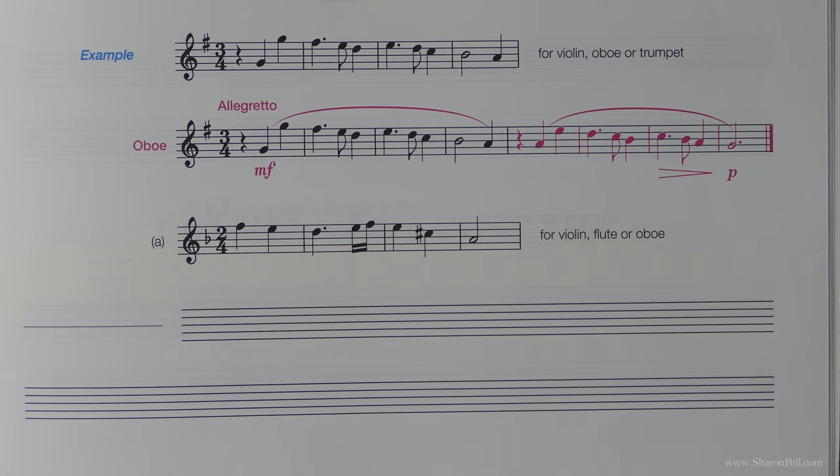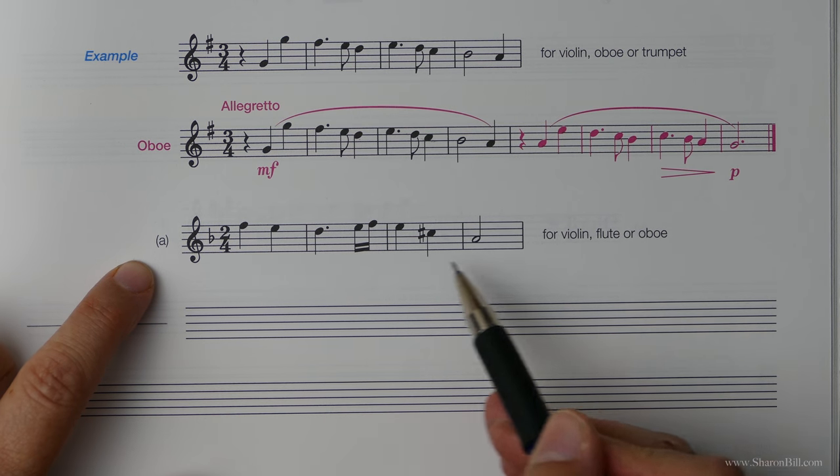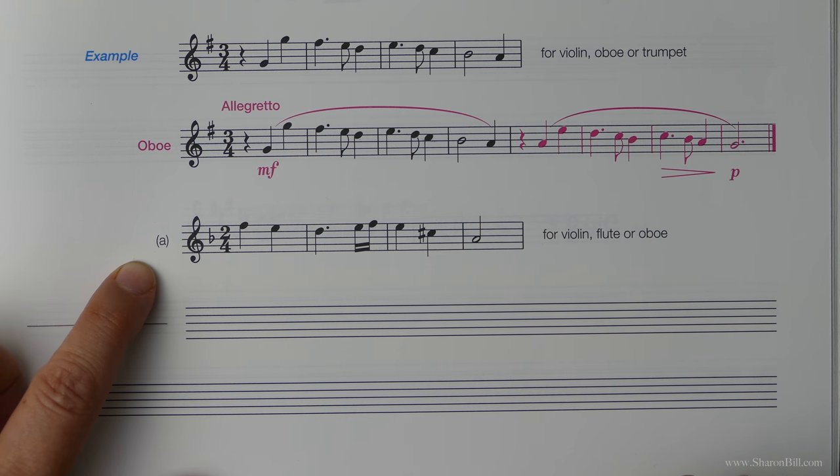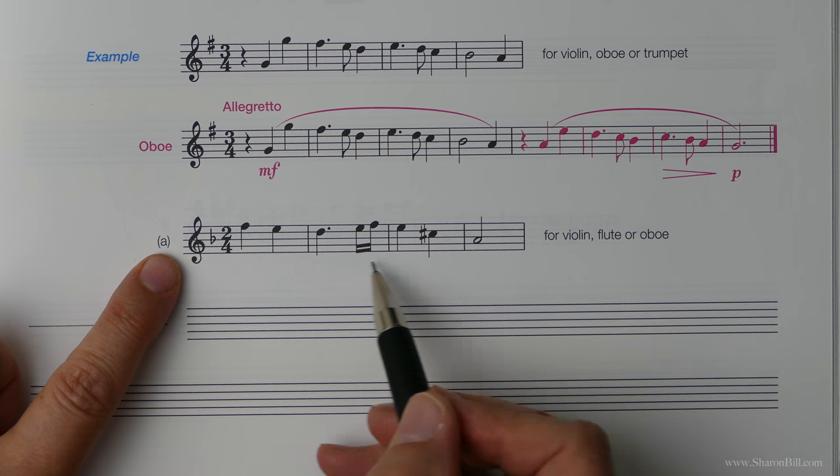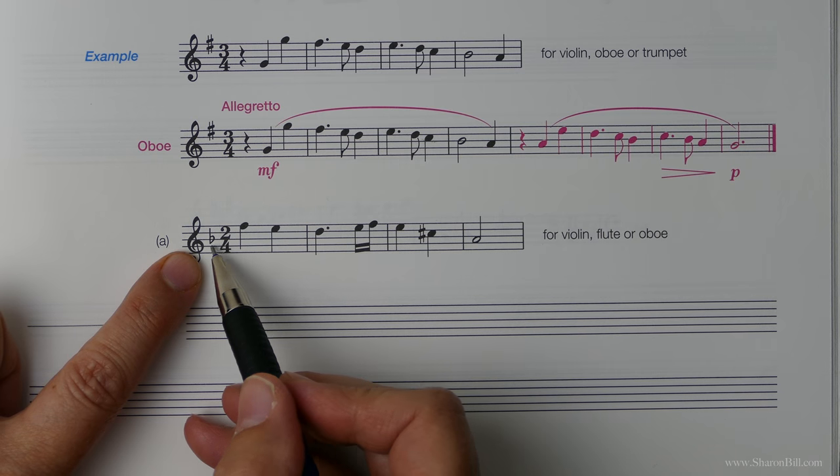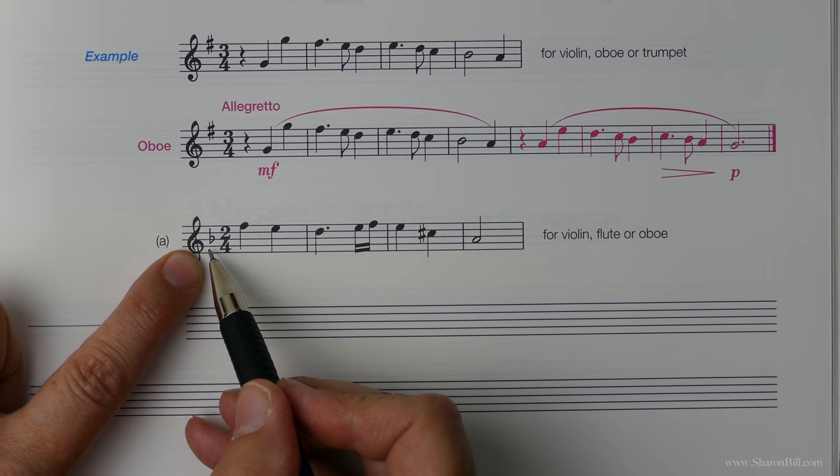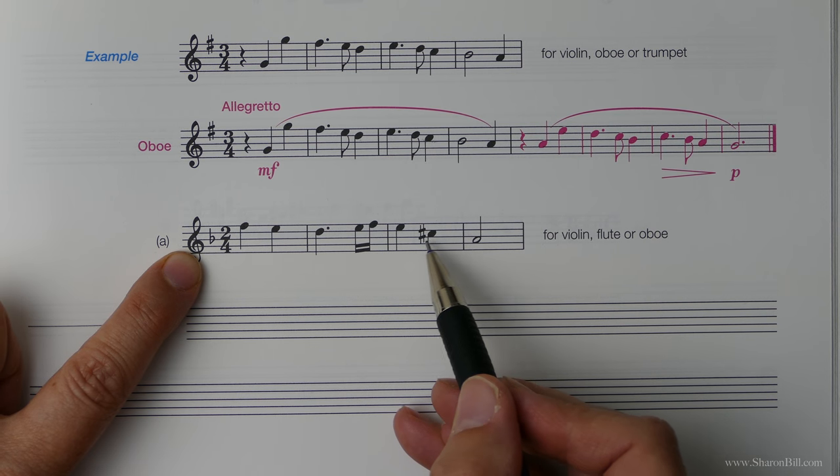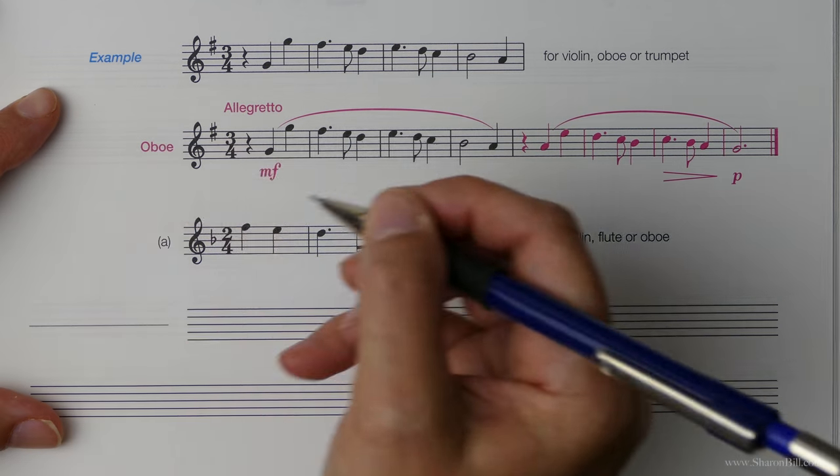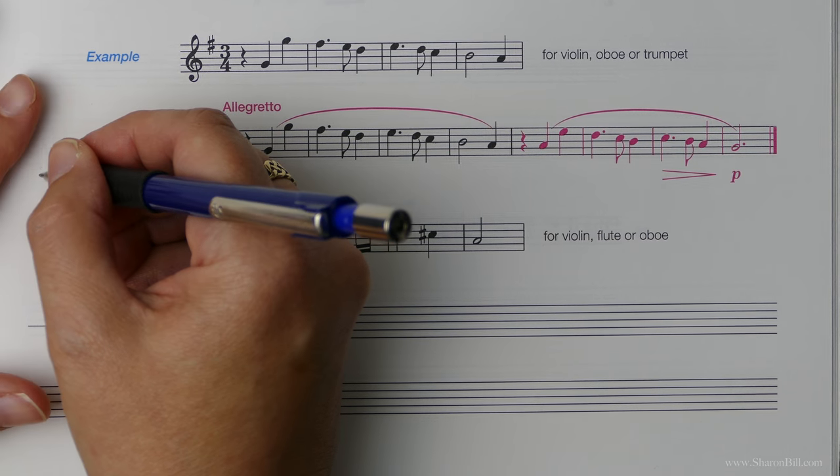So let's just have a go at exercise 1A and I'll talk you through the various points of consideration. First of all we need to decide what key we're in and so this B flat might first of all suggest that we're in the key of F major however the C sharp will tell us that we're actually in D minor because there's our raised seventh.